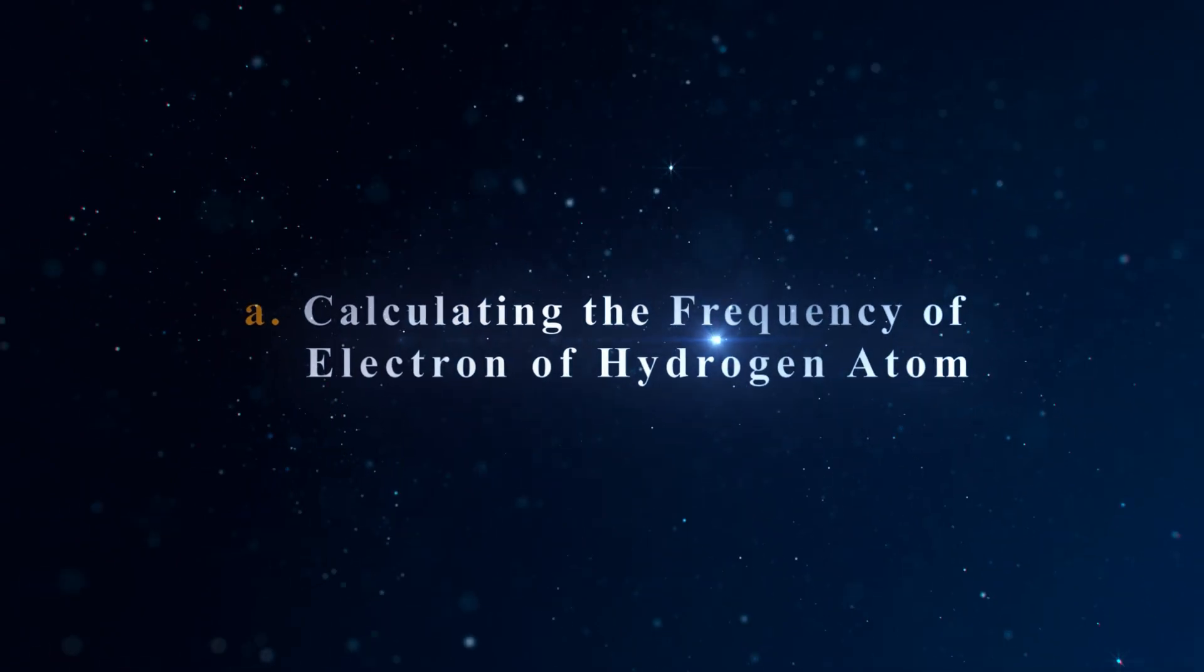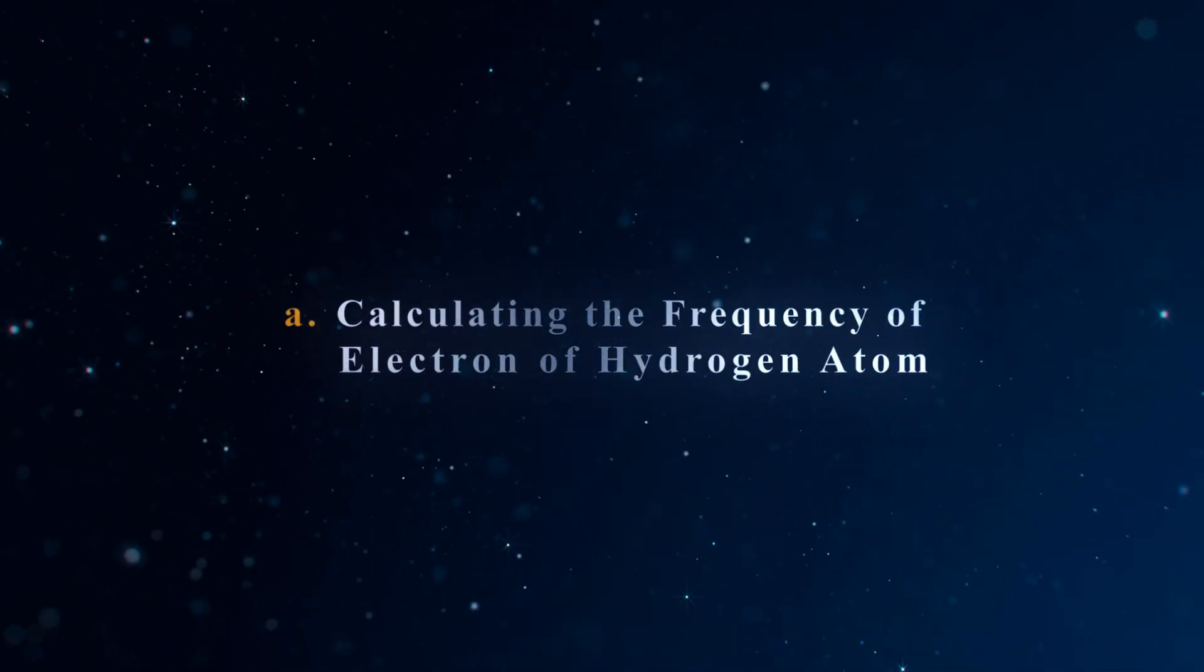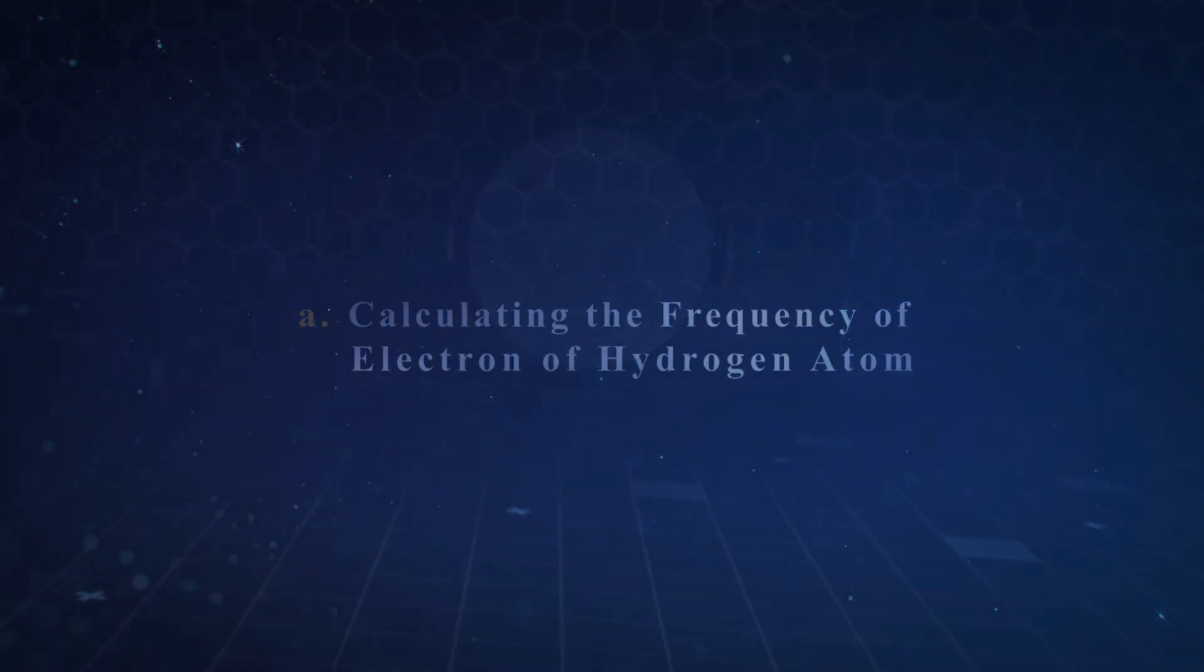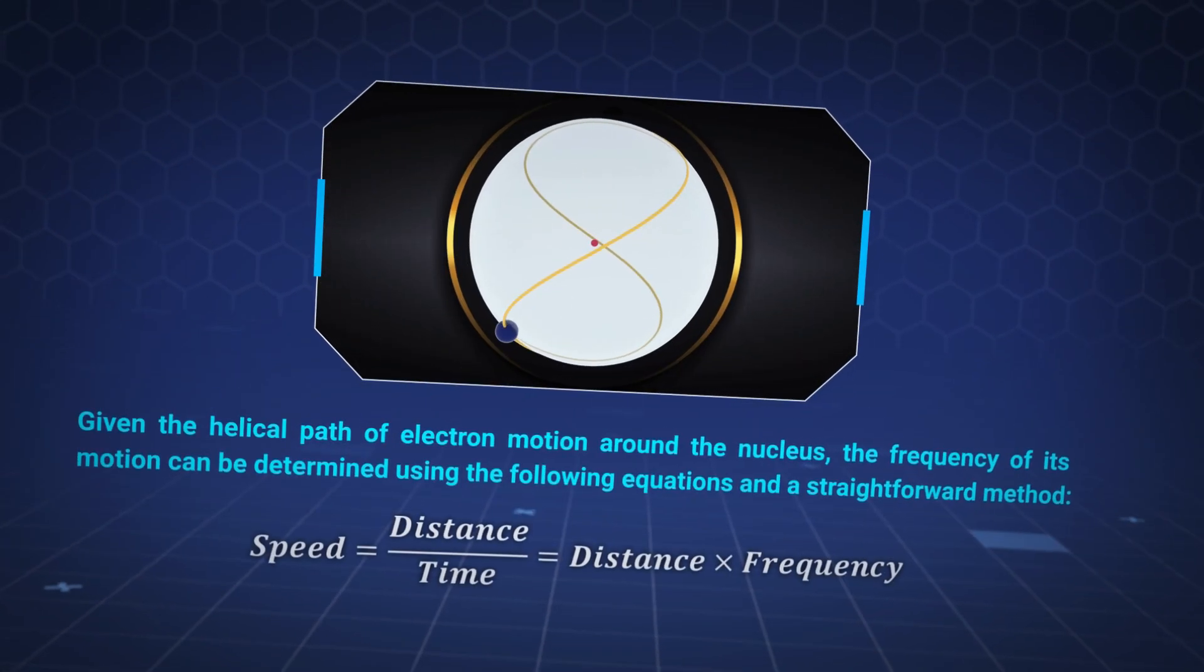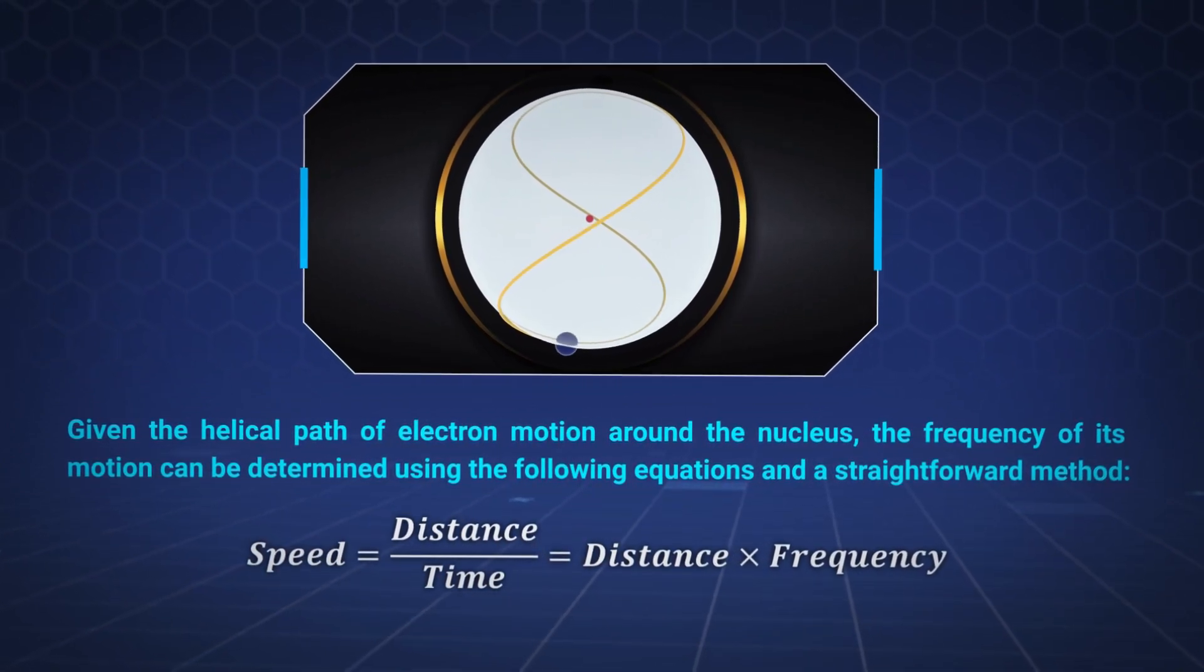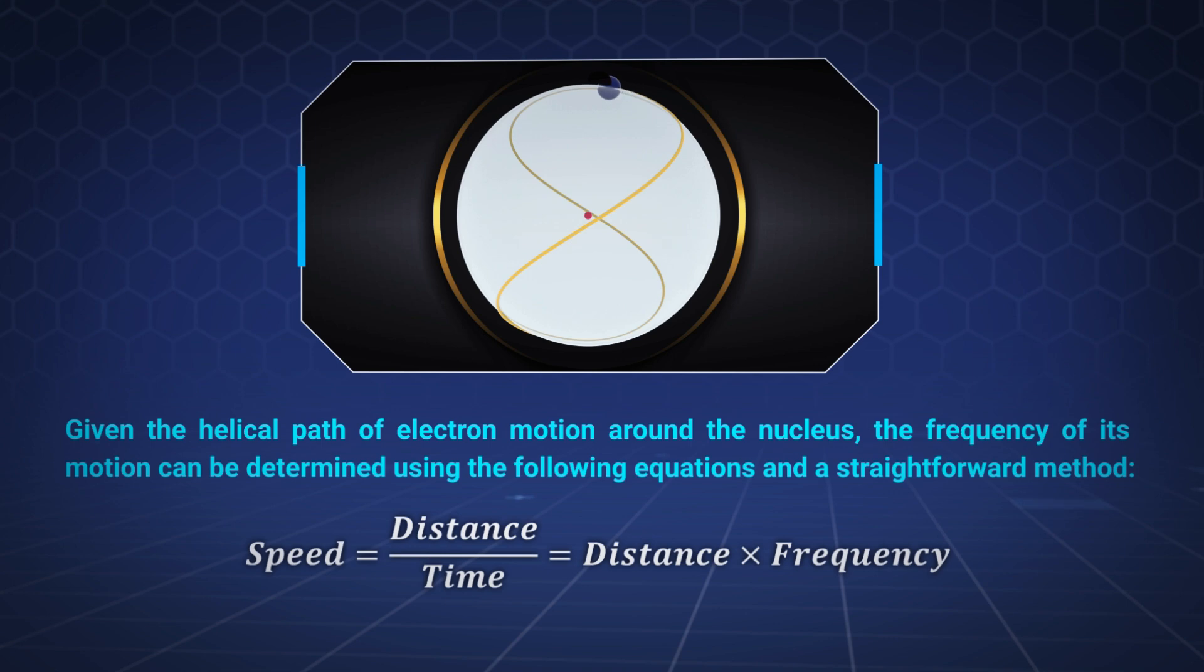Calculating the frequency of electron of hydrogen atom: Given the helical path of electron motion around the nucleus, the frequency of its motion can be determined using the following equations and a straightforward method.